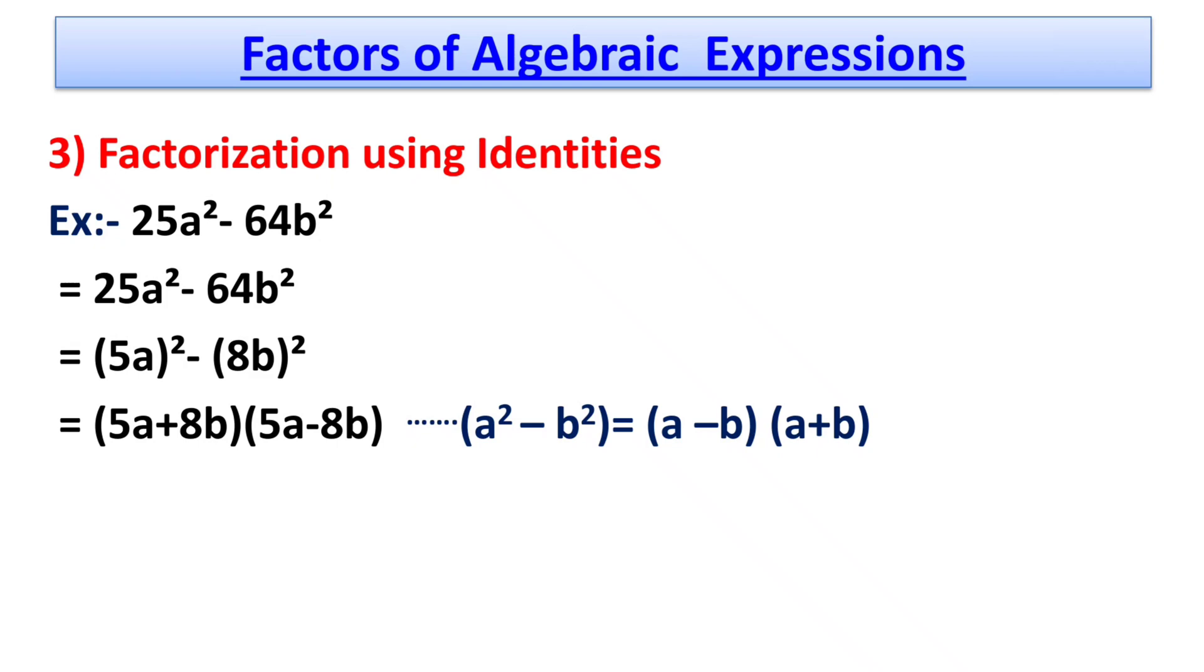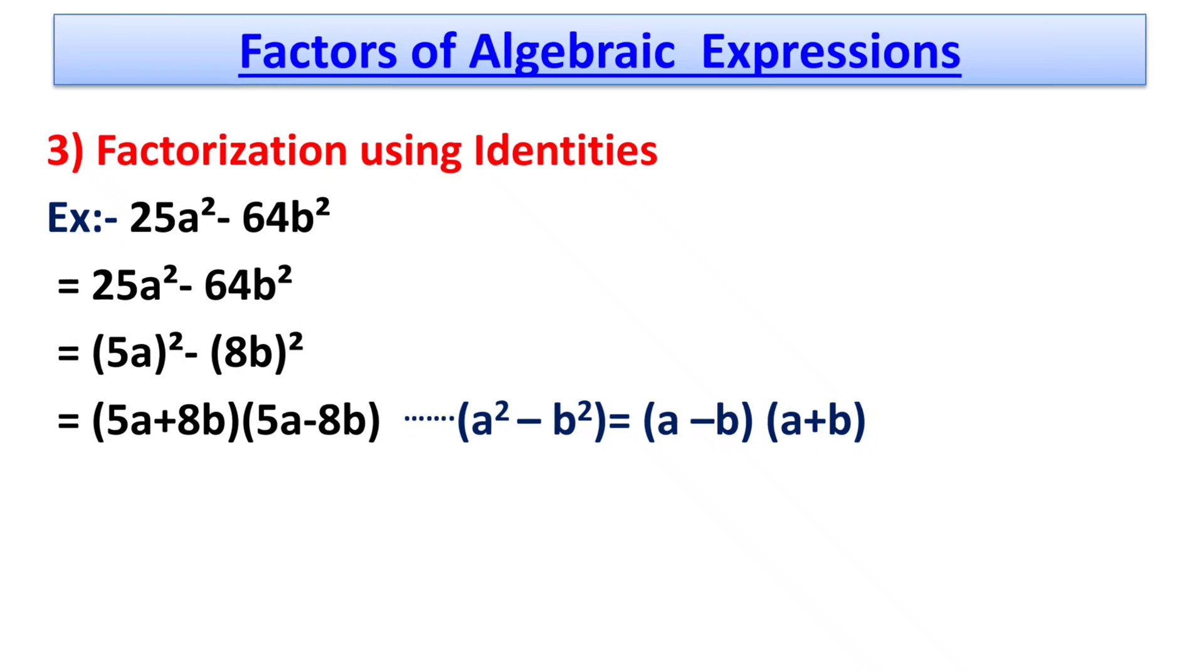Here we used the identity a² - b² = (a - b)(a + b). This is the method of factorization using identities.